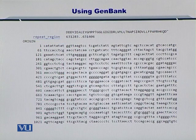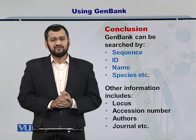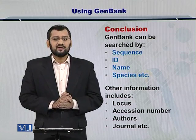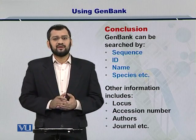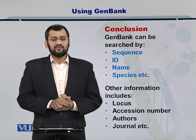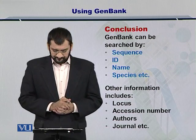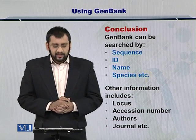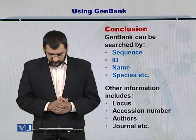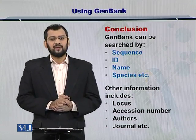In this way, you can search a specific gene, DNA sequence, or RNA sequence, reach its FASTA sequence, and analyze it further. The gene bank gives you the accession number, the sequence, the species, the organisms, amongst a lot of other information useful in your research. The other information includes the locus information, the authors, the journal, and the reporting people.